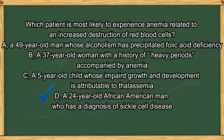The answer is D. Sickling episodes in sickle cell anemia involve increasing hemolysis of sickle cells. Options A and C — folate deficiency and thalassemia — cause a decrease in erythropoiesis. Option B — anemia related to menstruation — is a direct result of blood loss.